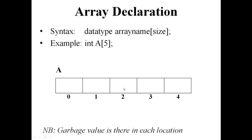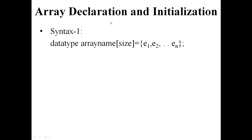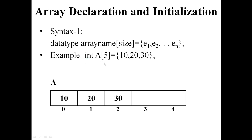Without initialization, the array contains garbage values. For array declaration and initialization, the first syntax is: data type, array name, size, equal to, within curly brackets, elements. For example, int a[5] = {10, 20, 30}. This is an integer array of size 5, with index 0 to 4.